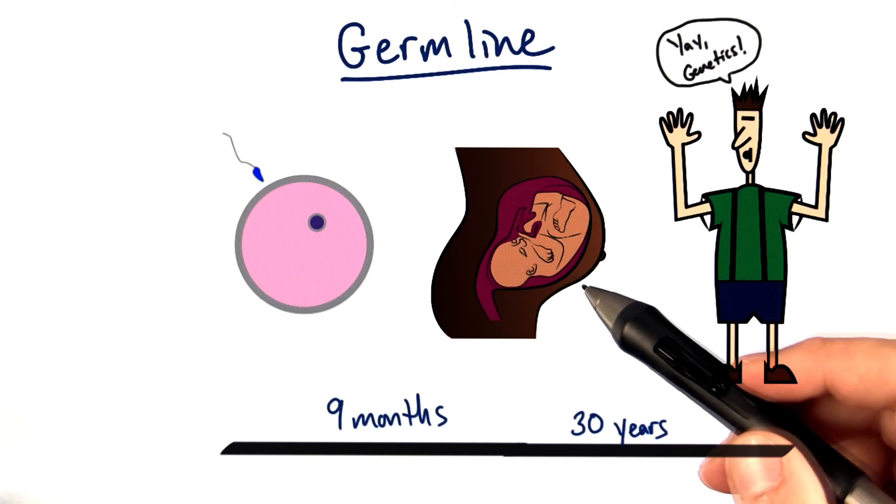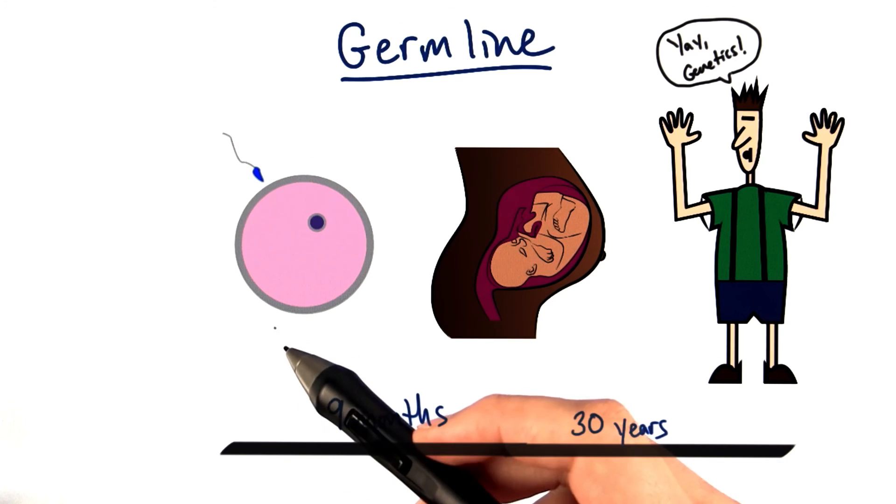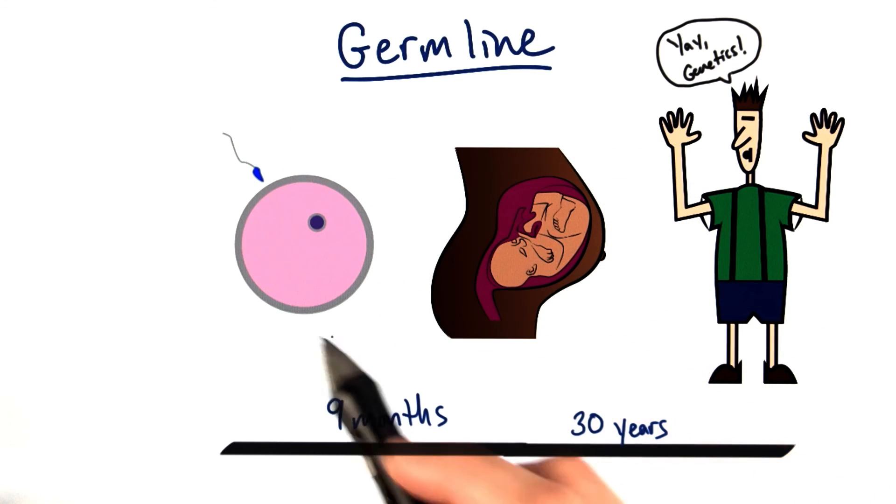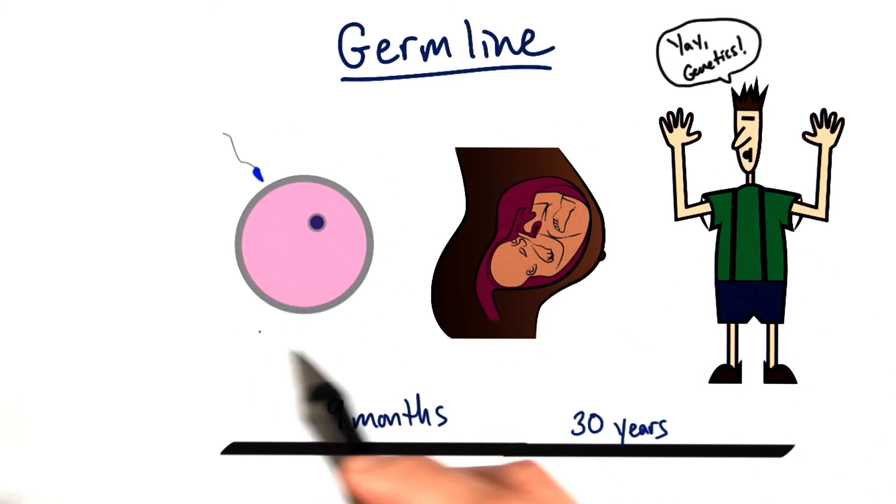About nine months before I was born, I was conceived, meaning that the sex cells from my parents, the sperm fertilized the egg, and I received my very first cell with a full genome. Half from mom, half from dad.